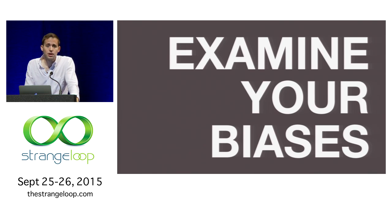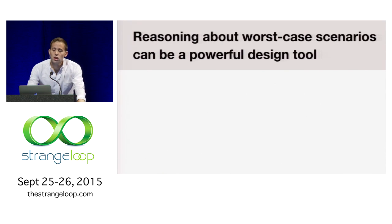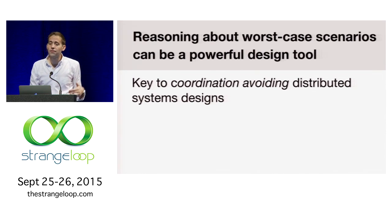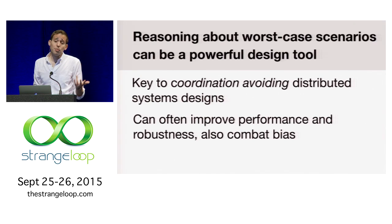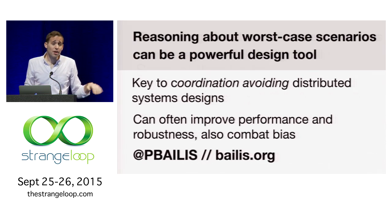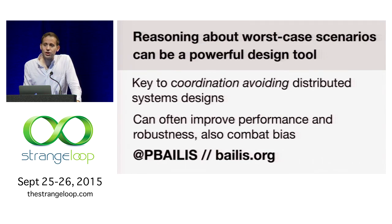Thinking about the worst case is a very important tool for examining your biases when building software and systems: Who is this software designed for? What environment do we expect this to be running in? And what happens if we are wrong? In conclusion, reasoning about worst case scenarios can be a very powerful design tool. This has been key in our research on coordination-avoiding database system designs, and can improve performance and robustness for a number of other scenarios, in addition to combating biases we run into when we build and operate software in practice. I'm Peter Bailis. I'd love to take any questions — thanks for your time.